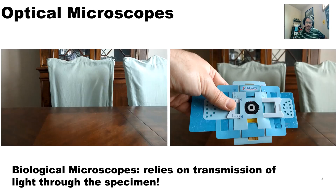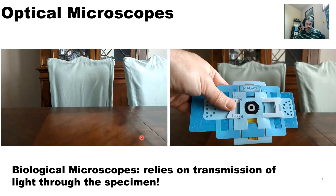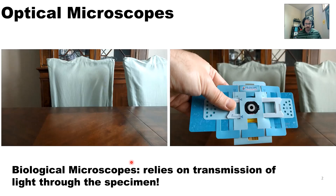Interaction of light with matter is what we're going to start talking about first. Biological microscopes like the two we just saw generally rely on the transmission of light through the specimen. The interaction of light with matter in this case would be transmission, and to some degree absorption as well, but in general it's transmission.